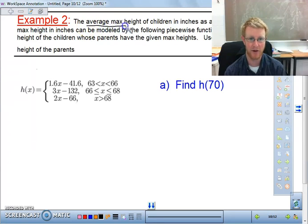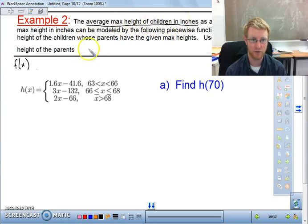So it says the average max height of children in inches as a function of their parents' max height. So normally we say things like function of x. Okay, meaning the first thing, the average max height of children in inches, is going to be the f(x). So the average height of children.